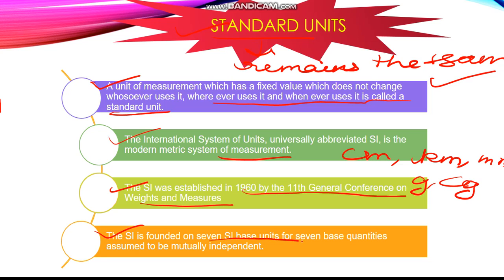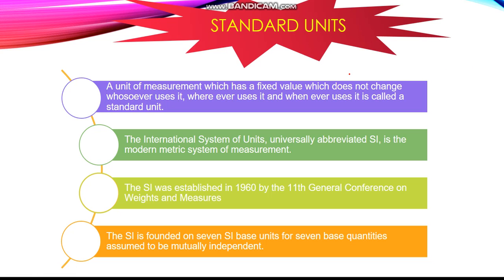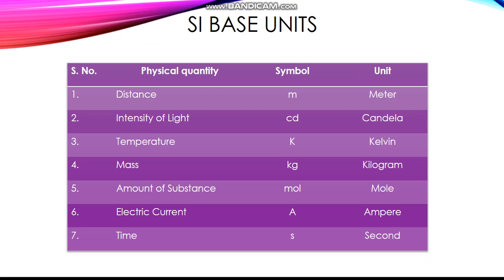The SI is founded on seven base units for seven base quantities assumed to be mutually independent. The seven base units consist of mole, candela, ampere, second, kilogram, Kelvin, and meter. Meter is for distance, candela for intensity of light, Kelvin for temperature, kilogram for mass, mole for amount of substance, ampere for electric current, and second for time.